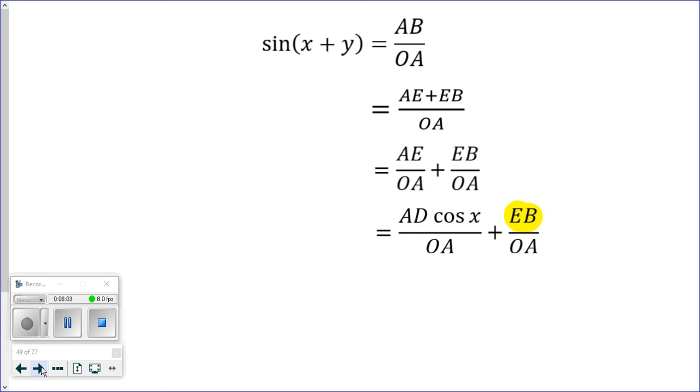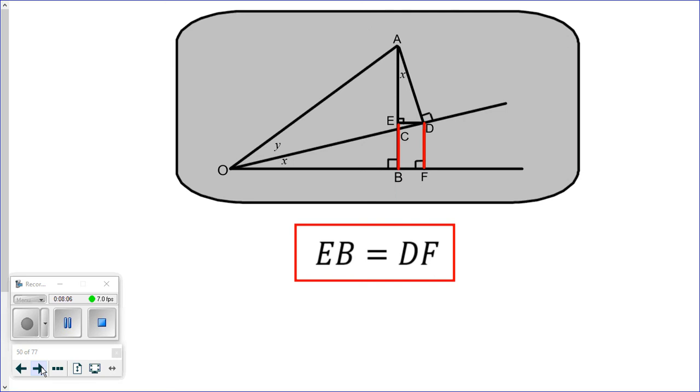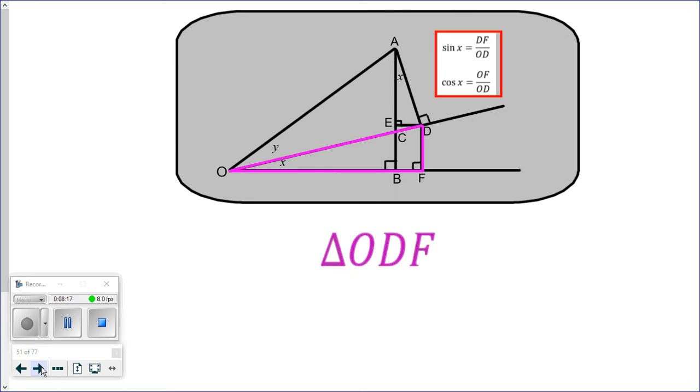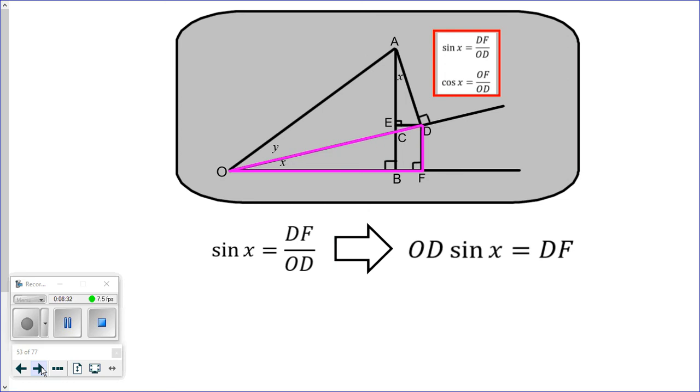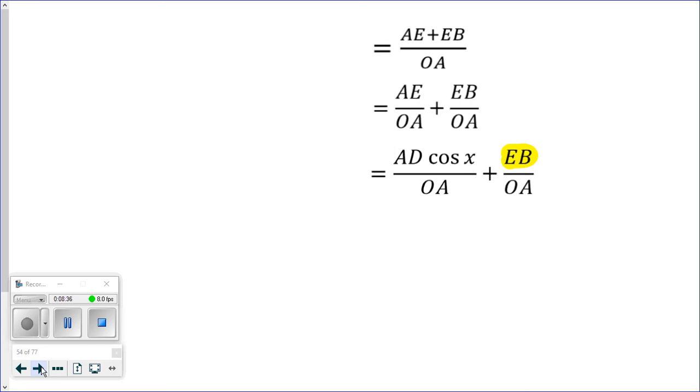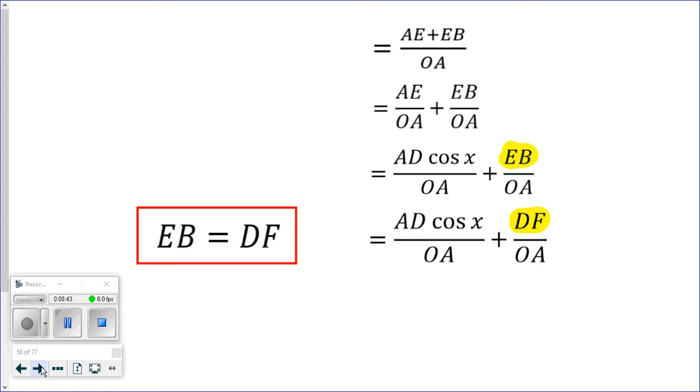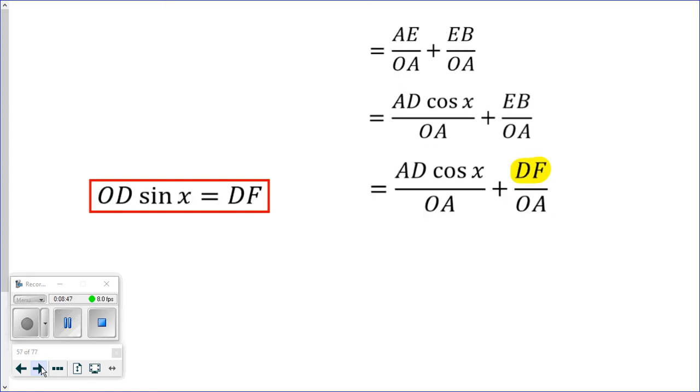Now let's do sort of the same idea with EB. Earlier we looked at the fact that EB was equal in length to DF. So if I'm talking about the length of EB, I can also talk about the length of DF. And we had a triangle called ODF, where we saw the sine and cosine ratios. And specifically, if you look at the sine ratio, we knew that sine X was equal to DF over OD, which can be written as OD times sine X is equal to DF. So back to our proof, EB, knowing that EB and DF are the same length, can be replaced with DF. So I've done that. Then we also learned that DF is equivalent to OD sine X. So I can replace DF with OD sine X. Happy to see sine X show up. Welcome to the party.